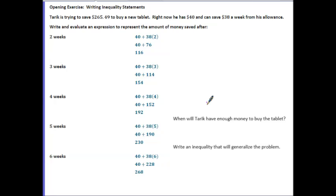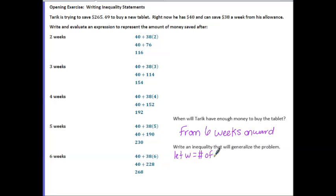When will Tariq have enough money to buy the tablet? Let's look at the tablet from 6 weeks on. Write an inequality that will generalize the problem. First, we need to define a variable — let w equal the number of weeks. If I look at each one of the weeks we did, everyone was pretty much the same. We were always taking 38 and multiplying it by the number of weeks, so I can represent that as 38w, and we were also adding 40 to that. What we were looking for was the scenario where this amount would be greater than or equal to $265.49.